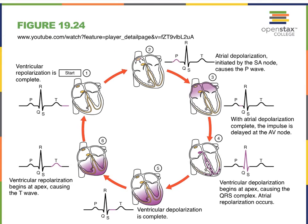Before we relate the contraction phases of the heart to the EKG, let's go over this illustration, which relates the flow of depolarization in the intrinsic conduction system to our EKG. There are also great YouTube videos that illustrate EKGs really well. Starting with number one, when the heart is basically at rest for a moment, in number two we see depolarization occurring at the SA node, leading to depolarization of both atria, represented here as our P wave.